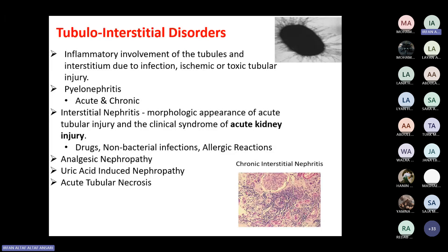Tubulo-interstitial disease is mainly due to inflammation in the tubules and interstitium. This inflammation most commonly comes through infection, but sometimes through ischemia — chronic ischemia — or due to toxic substances. Sometimes drugs can lead to direct injury to the tubular epithelium, known as acute tubular necrosis (ATN). So we have inflammatory involvement of the tubules and interstitium due to infection, ischemia, or toxic injuries.